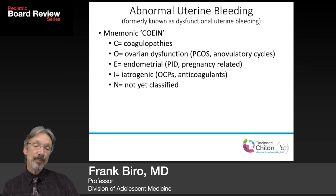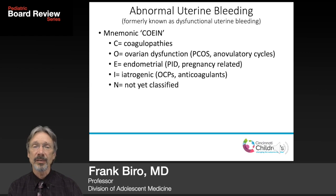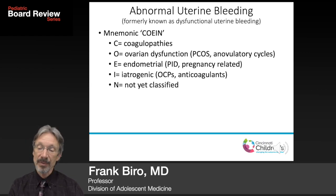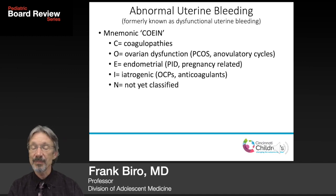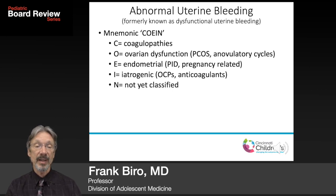Abnormal uterine bleeding — formerly known as dysfunctional uterine bleeding — uses the mnemonic COIN: Coagulopathies, Ovarian dysfunction/PCOS, Endometrial causes such as PID (though PID rarely causes true AUB, more typically spotting), Iatrogenic including birth control pills and anticoagulants, and N — not yet classified.